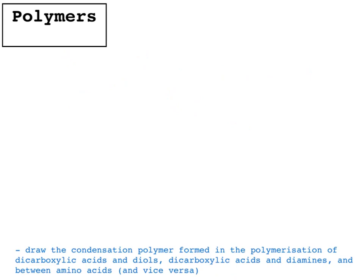So it's very likely you'd be asked to draw the condensation polymer formed in the polymerisation of different combinations of compounds. So dicarboxylic acids and diols, dicarboxylic acids and diamines, between amino acids, which have a carboxylic acid group on one end and an amine group on the other. So let's just start with a diol and a dicarboxylic acid.